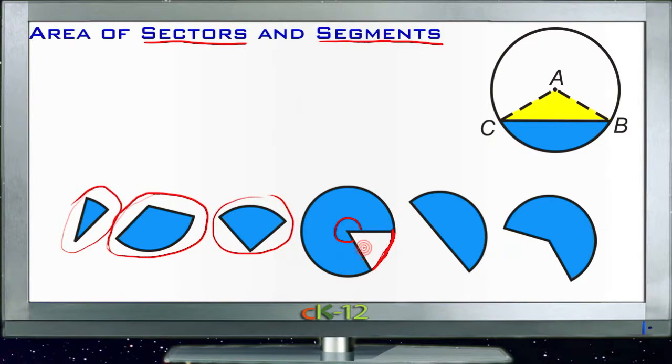If we, for instance, said that this sector right here represented nine-tenths of the circle - if this sector represents nine-tenths of the circle and the area of the circle is 20 units, then this segment would be nine-tenths of 20, or 18 units.